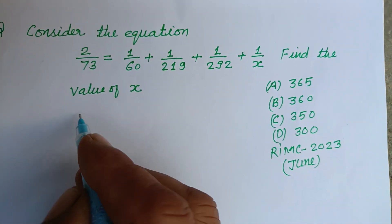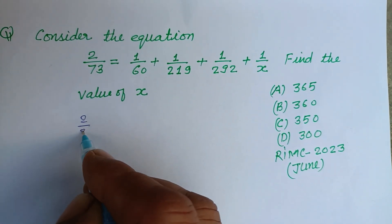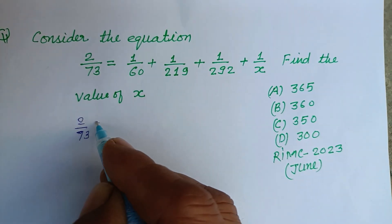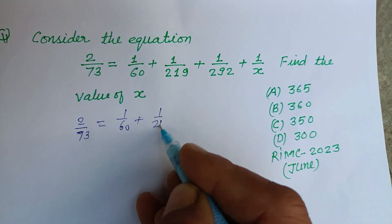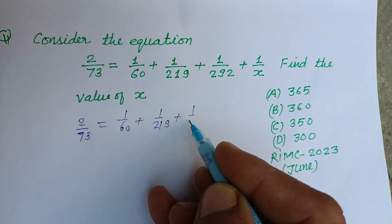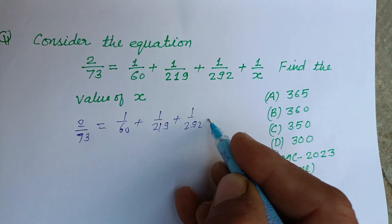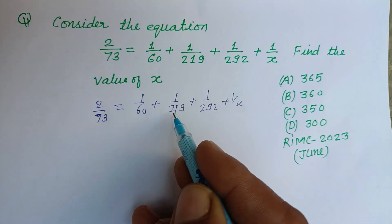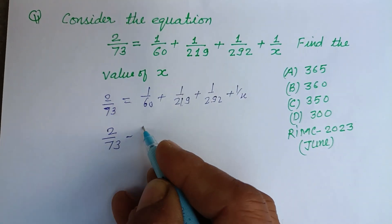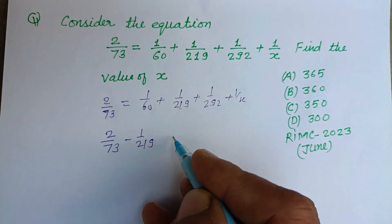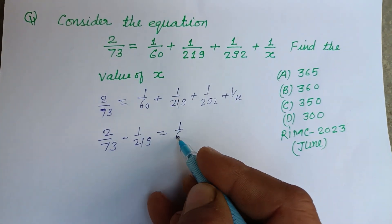So we have 2/73 = 1/60 + 1/219 + 1/292 + 1/x. First we bring 1/219 to the left side: 2/73 - 1/219 = 1/60 + 1/292 + 1/x.